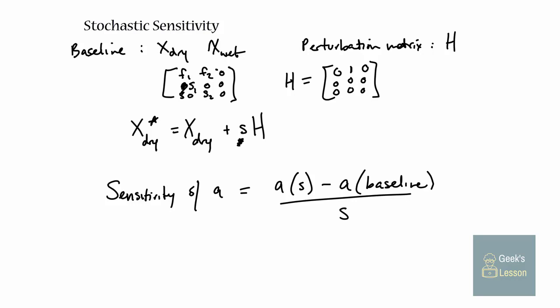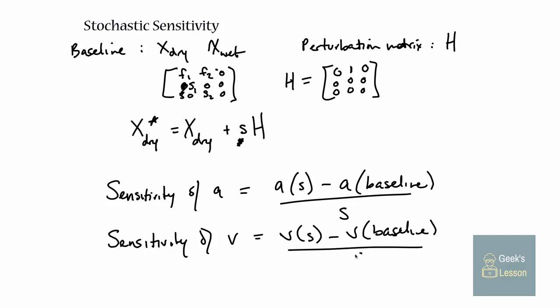That's actually quite clunky and there's a better way to do it. I'm just explaining it this way so conceptually you know what a sensitivity is. You can do the same thing for the sensitivity of the variance - it's just the difference between the variance you get in the perturbed model minus the variance in the baseline model, all divided by how big the change was. I'm going to give you the procedure for calculating stochastic sensitivities. If you want to see good proofs or more discussion, I recommend Hal Caswell's Matrix Population Models book - it's a fantastic resource.